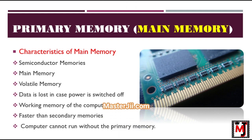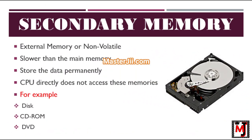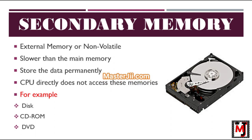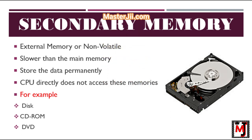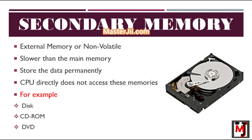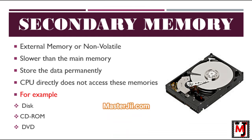The third type is secondary memory. This type of memory is also known as external memory or non-volatile memory. It is slower than the main memory. These are used for storing data or information permanently. The CPU does not directly access these memories; instead they are accessed via input or output routines. The contents of secondary memories are first transferred to the main memory and then the CPU can access them. Examples include disk, CD-ROM, and DVD.